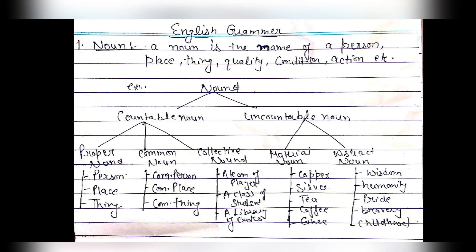The first topic is noun. A noun is the name of a person, place, thing, quality, condition, action, etc.